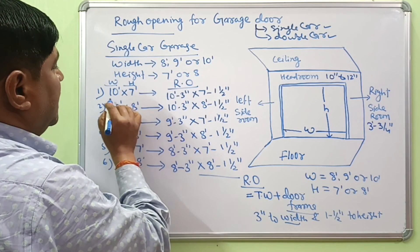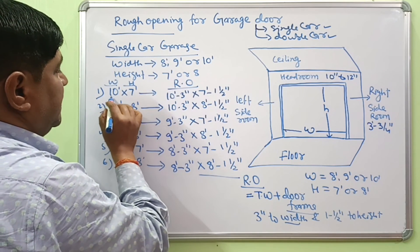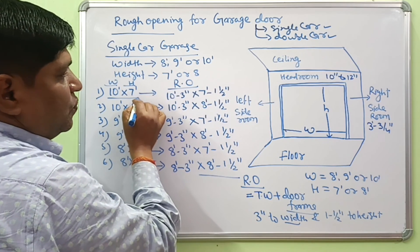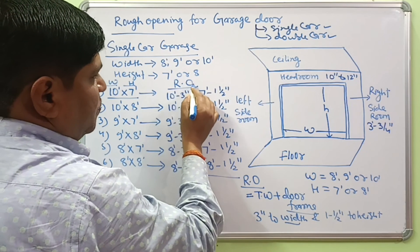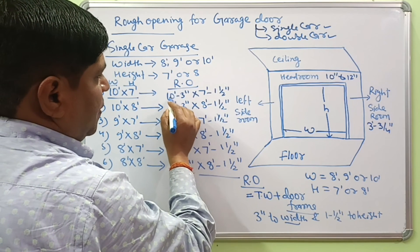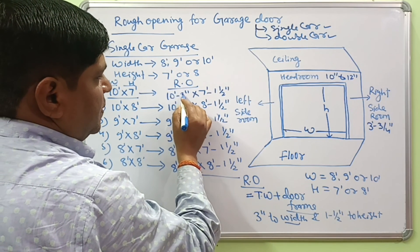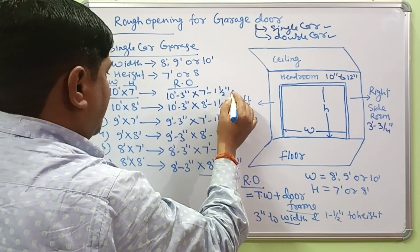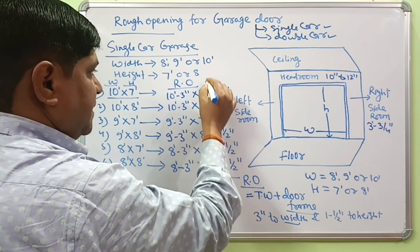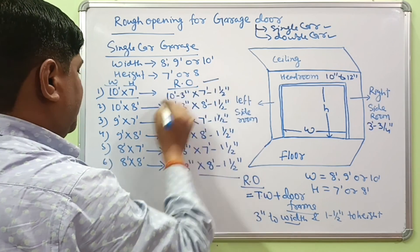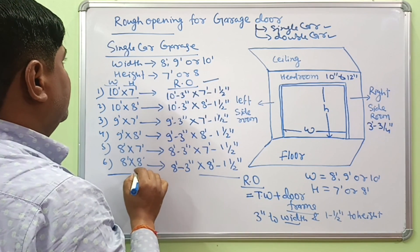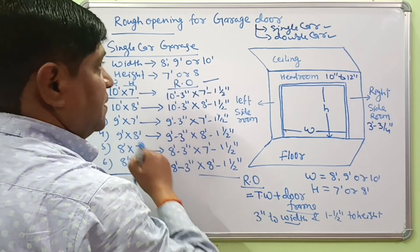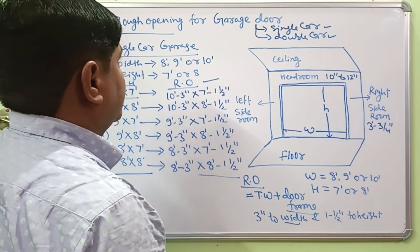If your single car dimension is 10 by 7 foot, then you need a rough opening of about 10 foot 3 inches by 7 foot 1 and a half inches. These are the rough openings for single car garage dimensions.